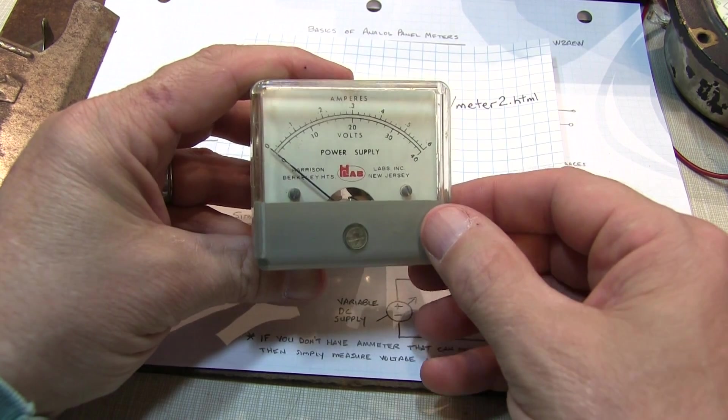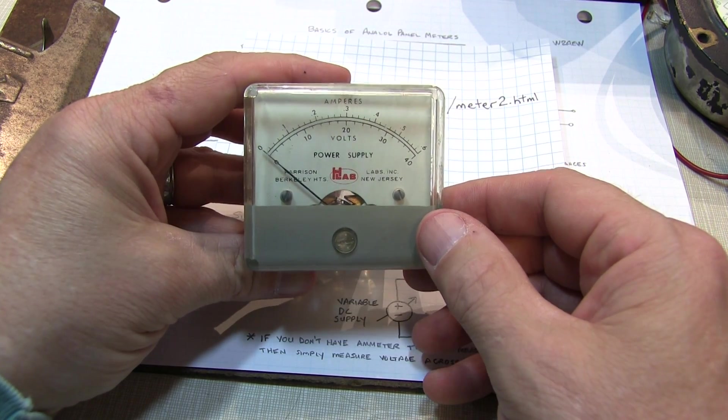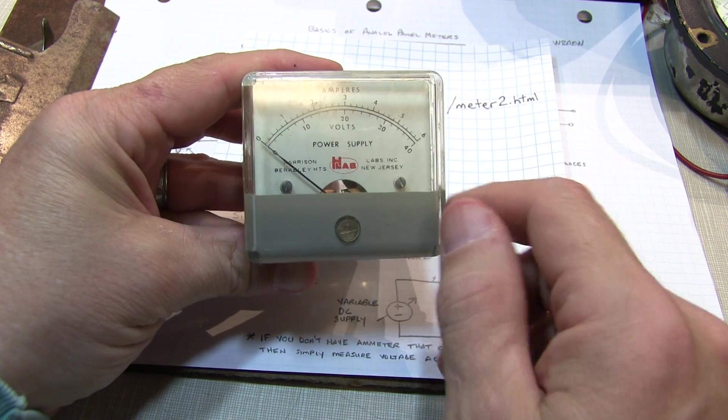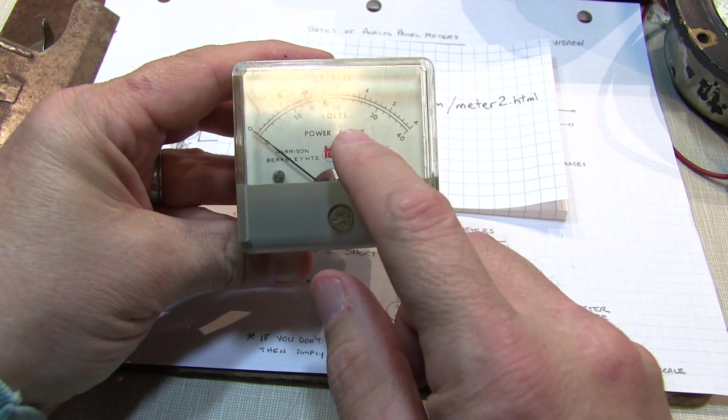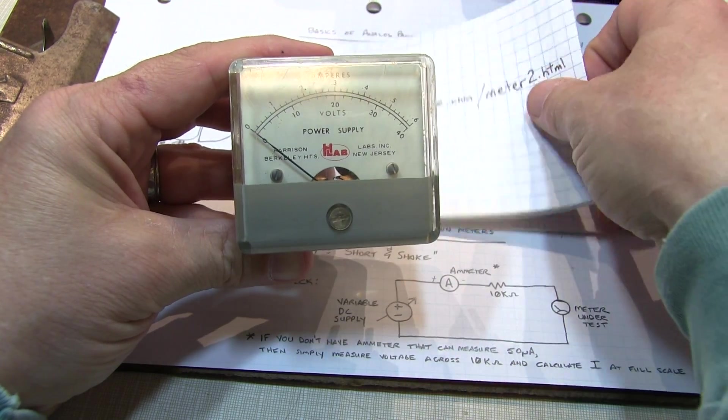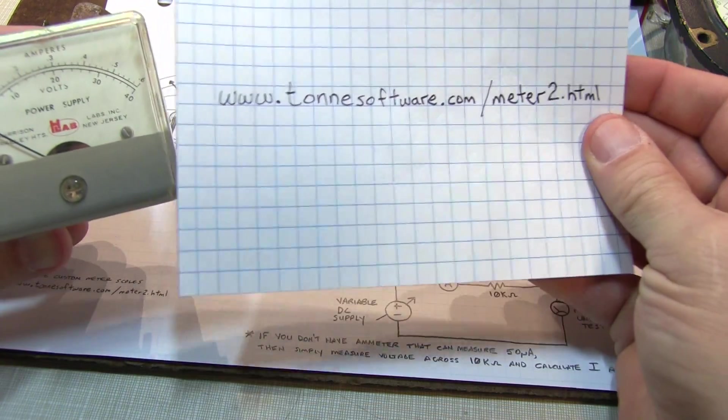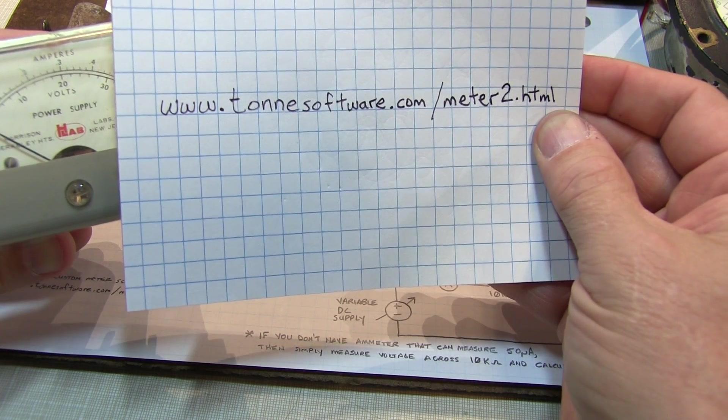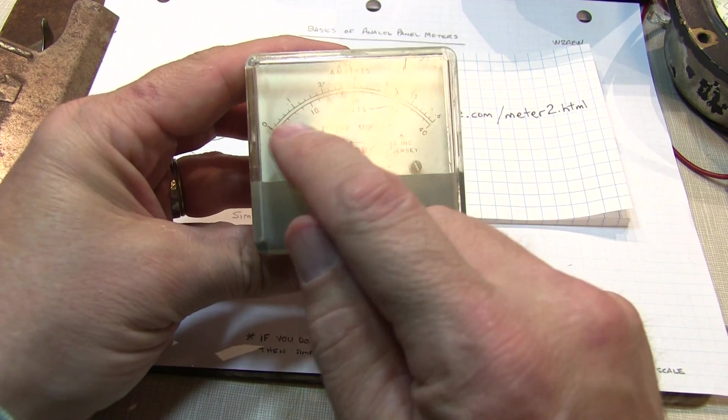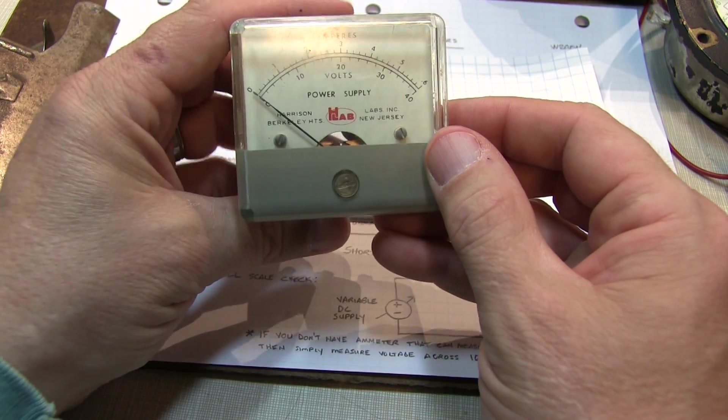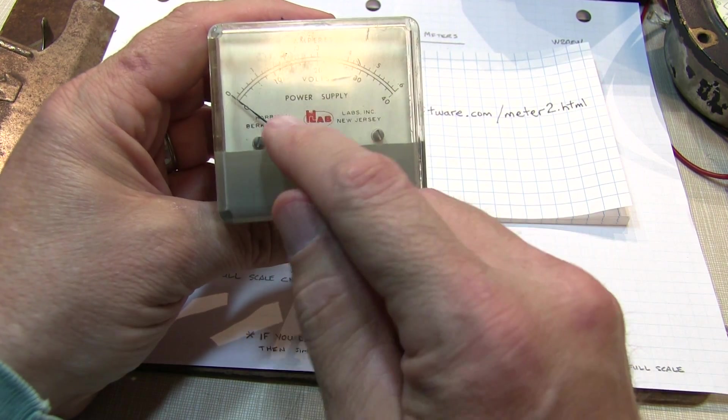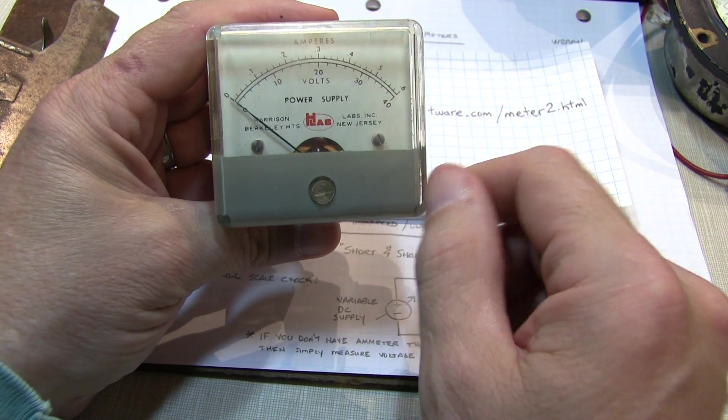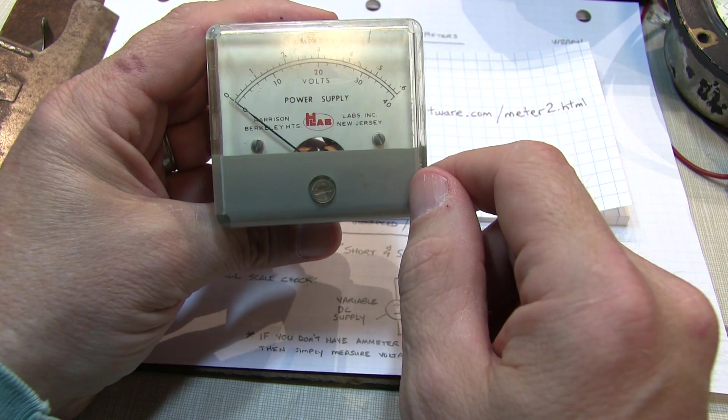Okay, so now you've found and tested a really nice meter to use in your next project. To really take it to the next level, what you might want to do is create a custom scale. Now, there's some really nice software that's available from Tawn Software. And I'll put this link down below, but I'll just put it up here if you want to see it. It's tawnsoftware.com/meter2.html. And with that, you can create your own scale and print it out on a label maker, or print it out on some self-adhesive paper or something like that to make yourself a custom scale. So you just now need to get to the scale that's in this meter.